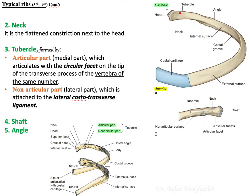After the head, the typical rib has a constricted part called the neck. Lateral to the neck is the tubercle. The tubercle is divided into two parts: an articular part and a non-articular part.